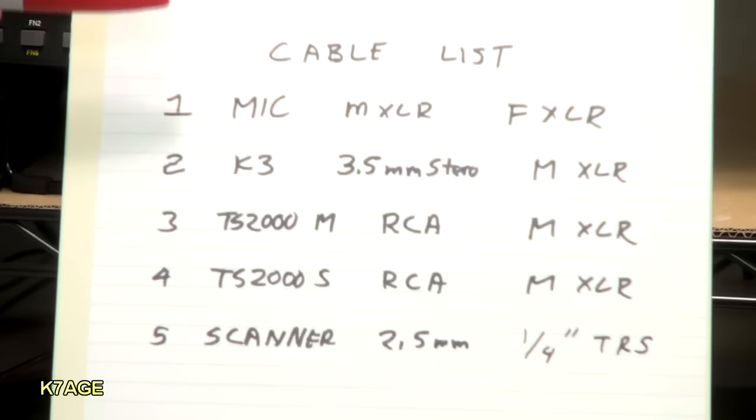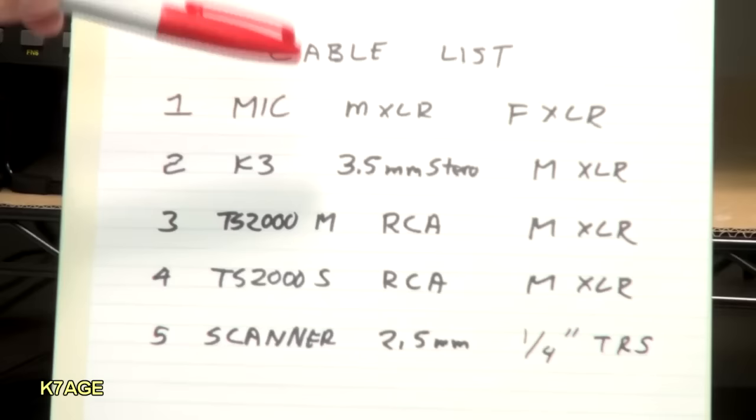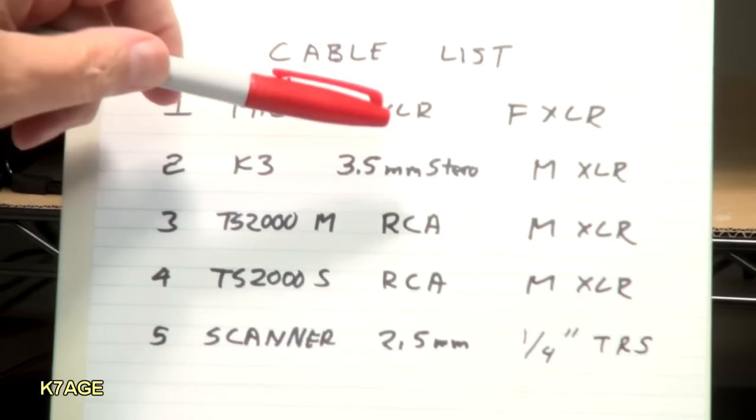So I've made a cable list here of all the cables that I need to connect the radios to the mixer. So for the microphone, it would be for an XLR microphone for video recordings. It just needs a male to female cable to go between the mic and the mixer. The K3 will use a 3.5mm stereo plug on one end to a male XLR on the other.